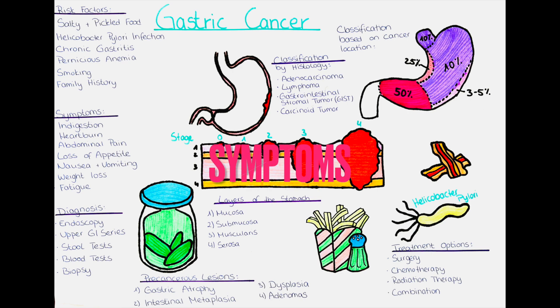What are the symptoms of gastric cancer? Symptoms of gastric cancer may include indigestion, heartburn, abdominal pain, loss of appetite, nausea and vomiting, unintentional weight loss and fatigue. In the early stages, gastric cancer may not cause any symptoms, which makes it difficult to diagnose and often delays a diagnosis. At the point of diagnosis, around 70% of patients already have a metastasis.